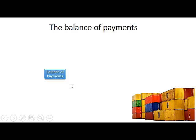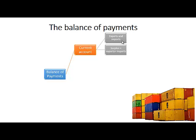The balance of payments consists firstly of a current account. The current account includes exports and imports of goods and services and factor payments. If exports are larger than imports there will be a surplus on the current account, and if imports are larger than exports there will be a deficit on the current account.